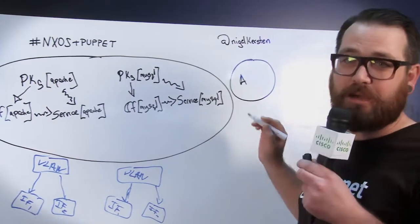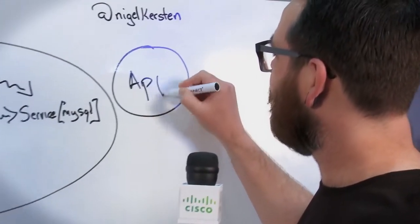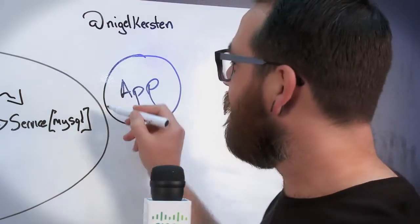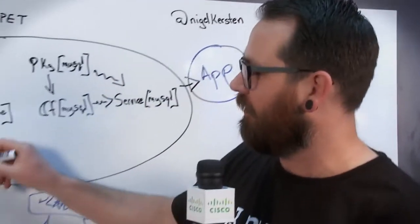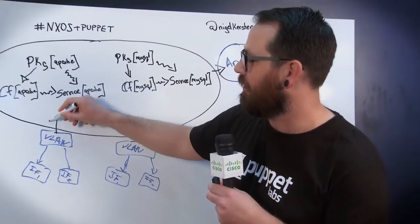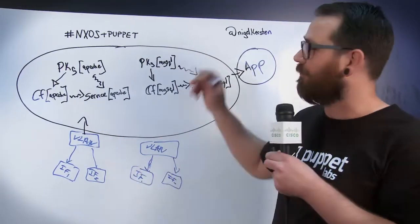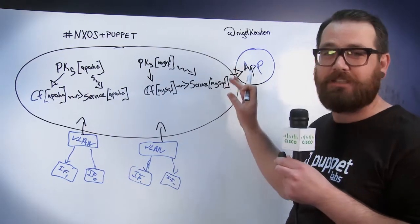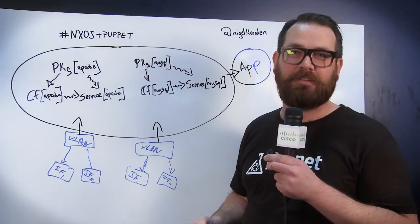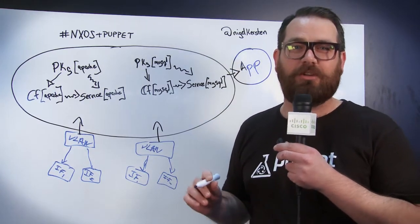Let's draw the application in as a bundle. This is going to be our business application here. We can have exactly the same relationship so that we know the network devices here are all dependent upon... The network has to be set up before the services are running. Then the whole thing has a transitive dependency through to the actual application. Once you've got the actual application going...